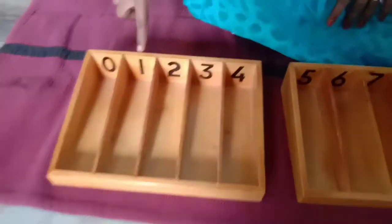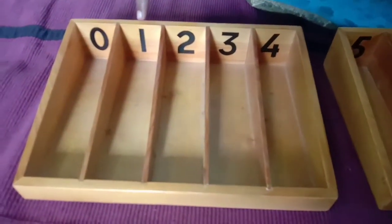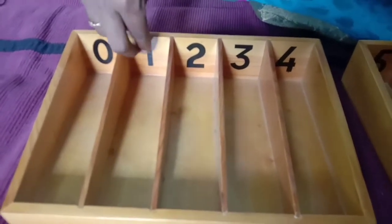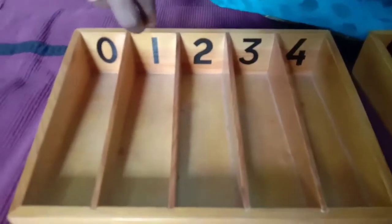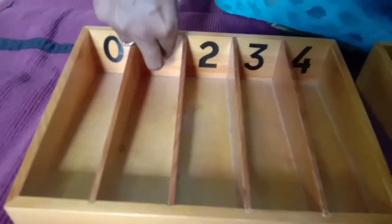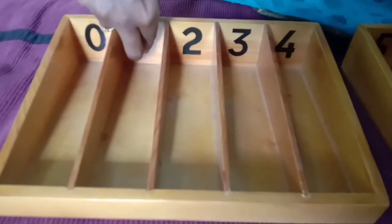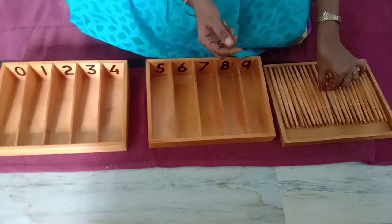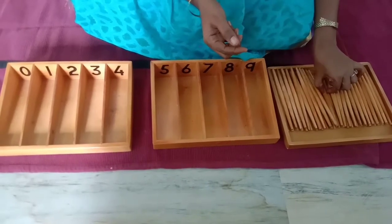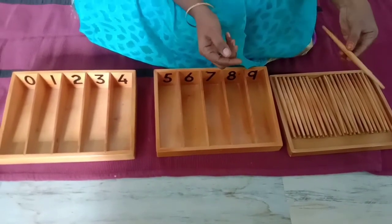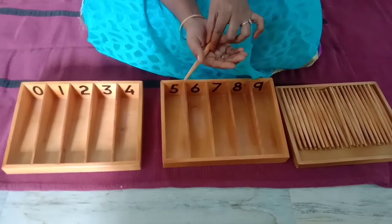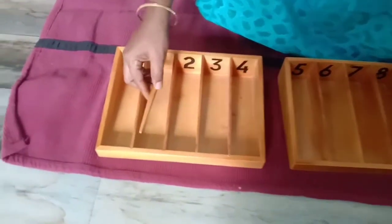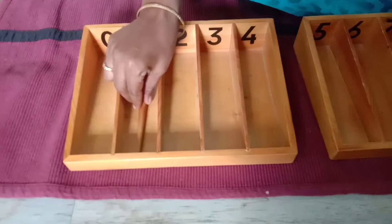And the next one is, what is the number? 1. Say again. 1. Raise it. 1. And we have to take 1 spindle. Count and take. 1. And transfer to the other hand. 1. So put it into that particular compartment slowly.